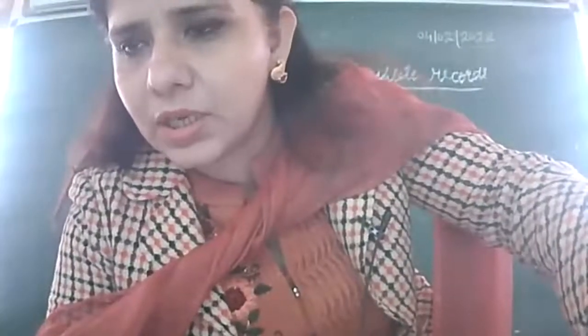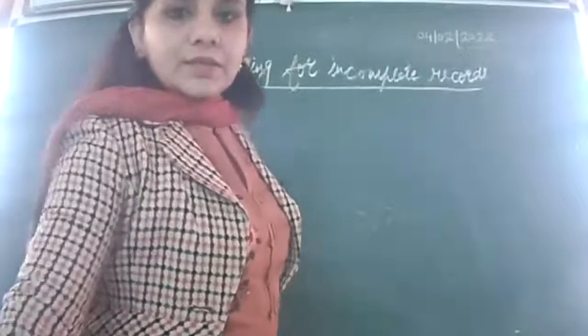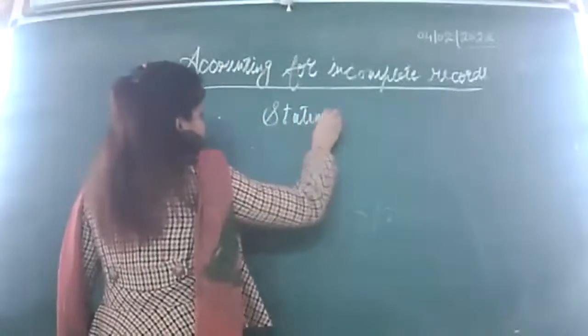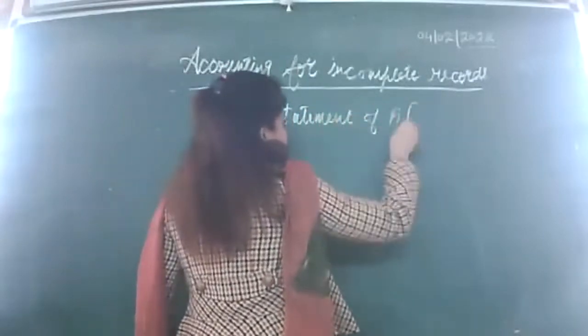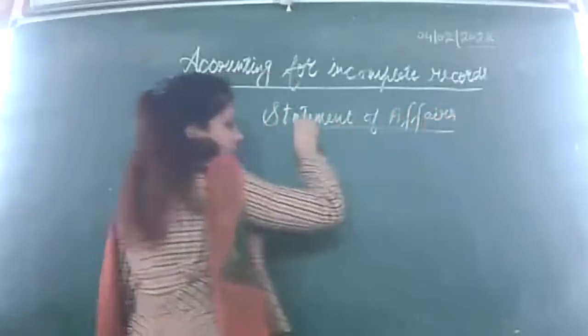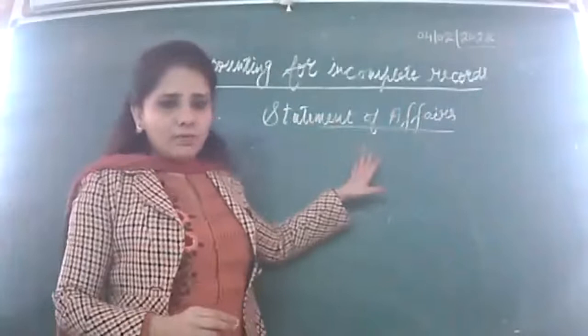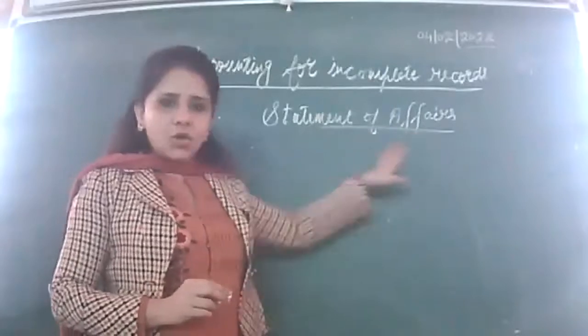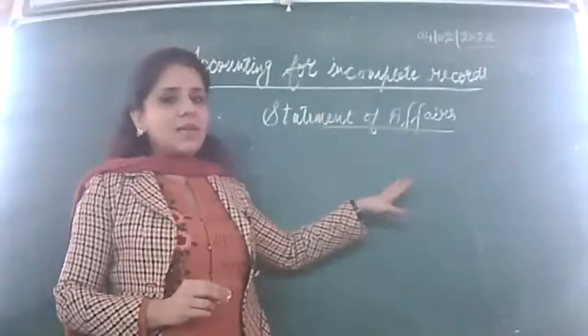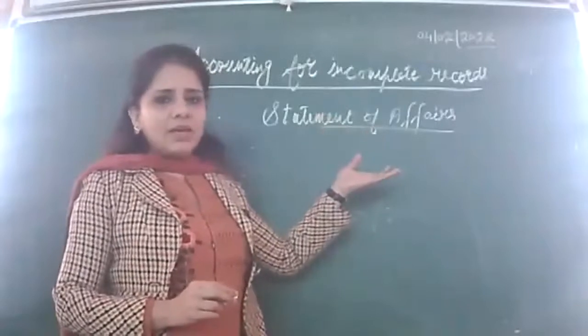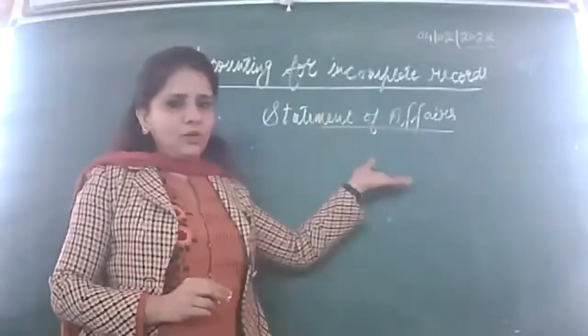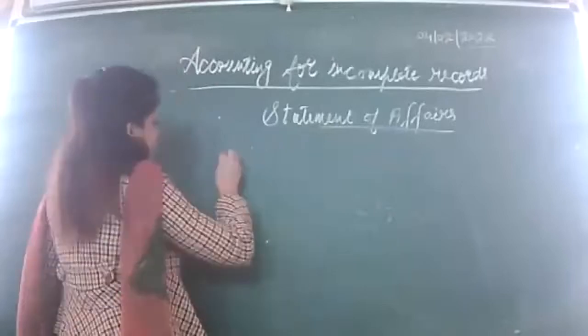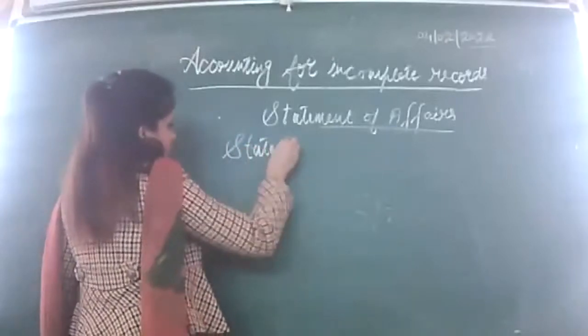Let's proceed to the next topic. Yesterday we learned about the preparation of statement of affairs. Statement of affairs is same as your balance sheet, but in balance sheet we will not get any balancing figure. When we prepare statement of affairs, we do get a balancing figure. If we prepare it at the beginning of the year, then opening capital can sometimes be the balancing figure. If opening capital is already given, then we prepare statement of affairs at the end of the year and we get the closing capital as the balancing figure.